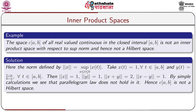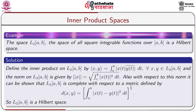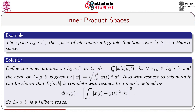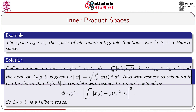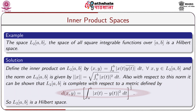Example 4: The space L^2[a, b] of all square integrable functions over [a, b] is a Hilbert space. Define the inner product on L^2[a, b] by ⟨x, y⟩ = integral from a to b of x(t) times conjugate of y(t) dt for all x, y in L^2[a, b]. The norm is given by norm of x = square root of integral from a to b of |x(t)|² dt. With respect to this norm, L^2[a, b] is complete with metric d(x, y) = (integral from a to b of |x(t) − y(t)|² dt)^(1/2), making L^2[a, b] a Hilbert space.